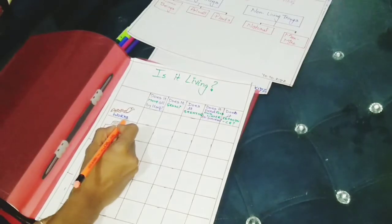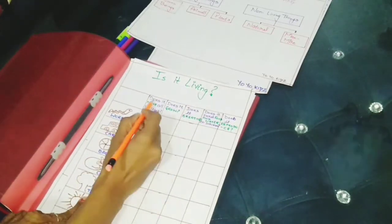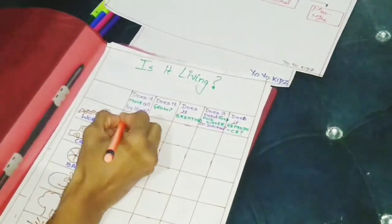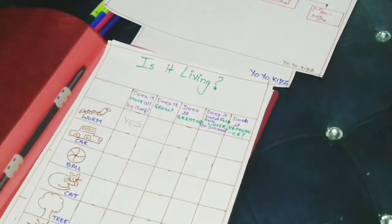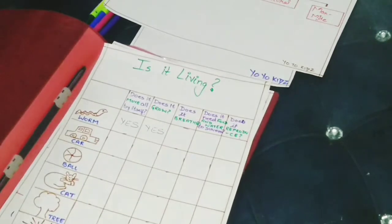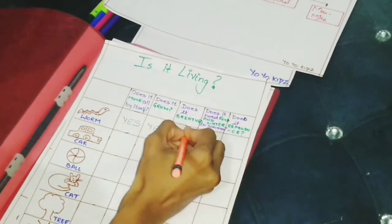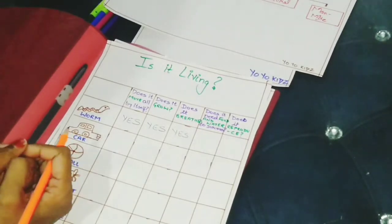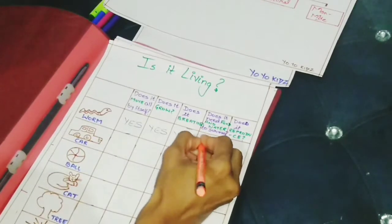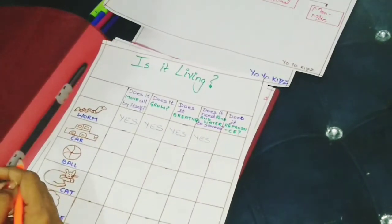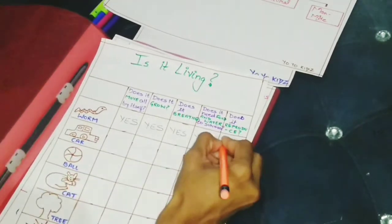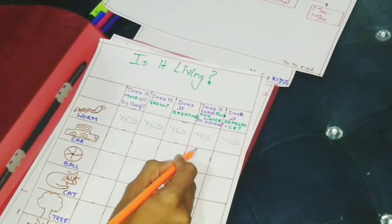First, it is a worm. It is a type of insect. The question is, does it move? Can it walk? Yes. Does it grow? Yes. Does it breathe? Yes. Does it need food and water to survive? Does it eat? Yes. Insects also need food. Does it reproduce? Does it have babies? Yes. So it means it is a living thing.